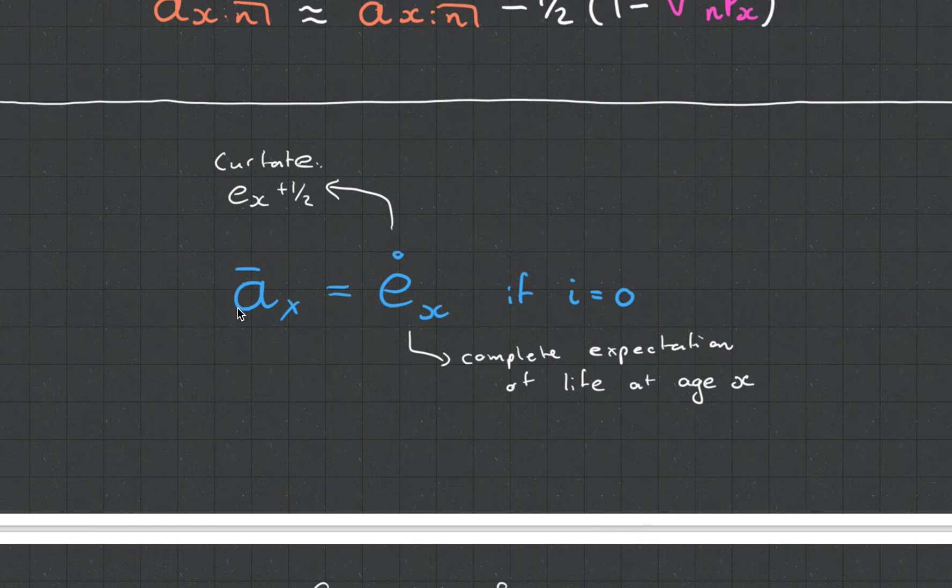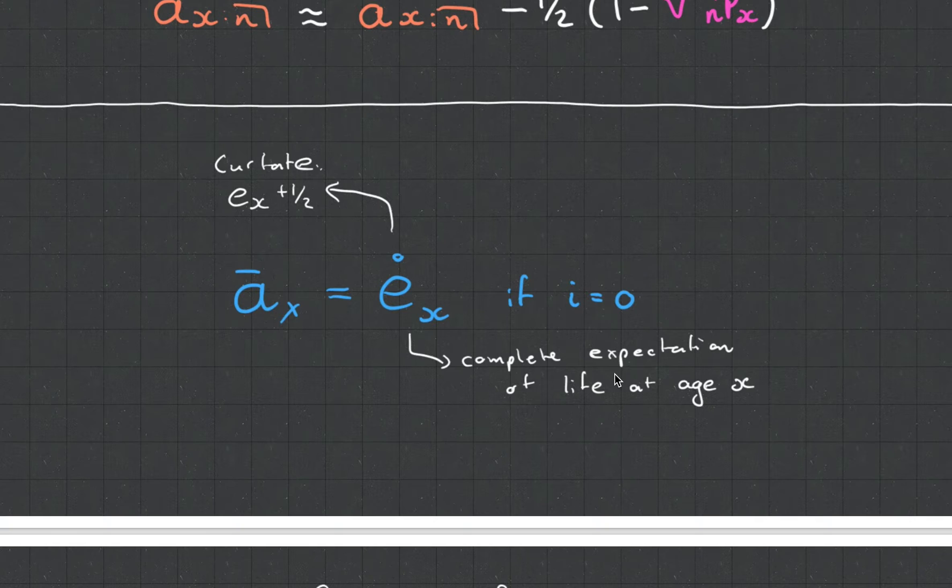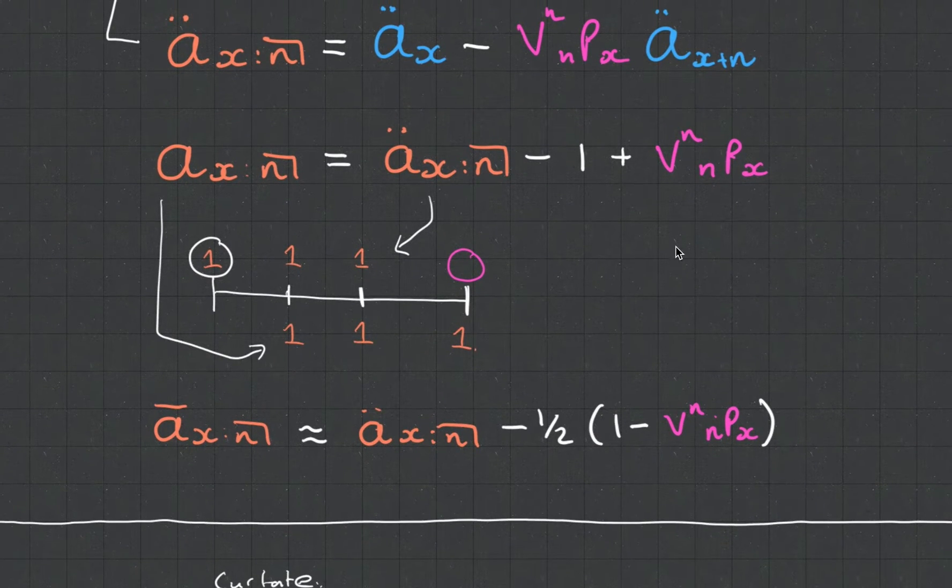And this makes sense because if interest rate is zero, then this VNNPX guy falls away and we just have the force of mortality, which is used to calculate life expectancy.